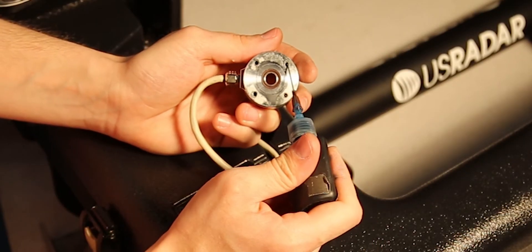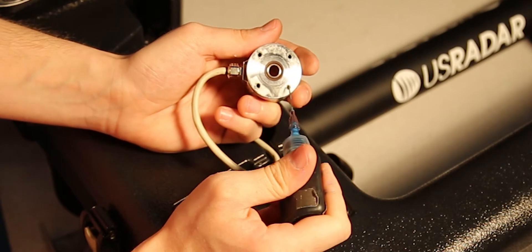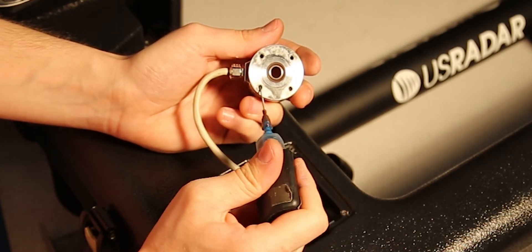Apply a drop of blue Loctite or any other compatible thread locking adhesive to each of the four threads of your replacement encoder.